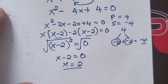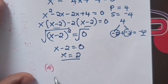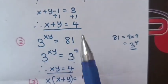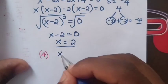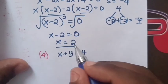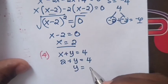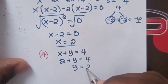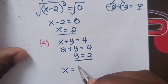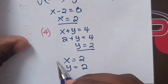Step 4: From the result of step 1, x plus y equals 4. Substituting x equals 2, we get 2 plus y equals 4, so y equals 2. Therefore, the solution is x equals 2 and y equals 2.